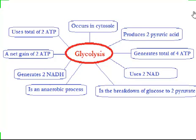Now let's summarize the process of glycolysis. Where does glycolysis occur? It takes place in the cytoplasm. How many pyruvates are produced? Two pyruvic acid. How many total ATP are generated during glycolysis? Four ATP are generated. How many NAD are used? Two NAD are used during this process.